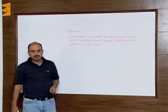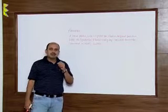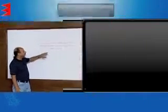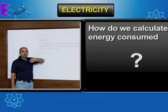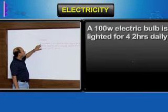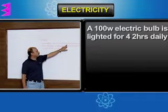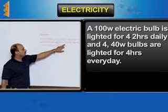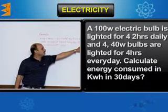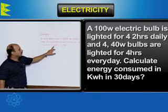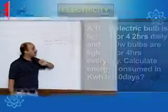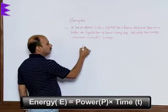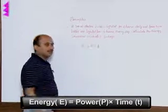We have done heating effect of current and the formula for power and energy. Now let us do an example of how we calculate energy consumed. Energy is equal to power into time — this is the formula.